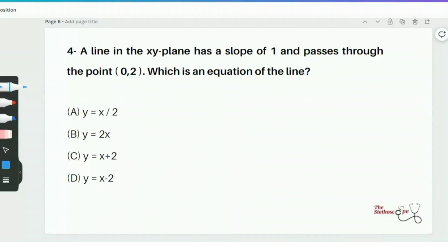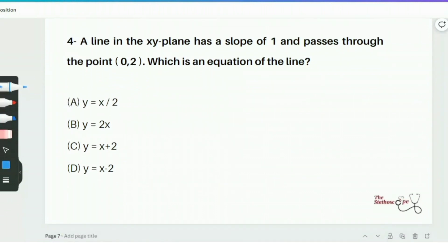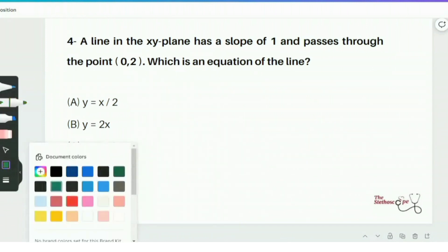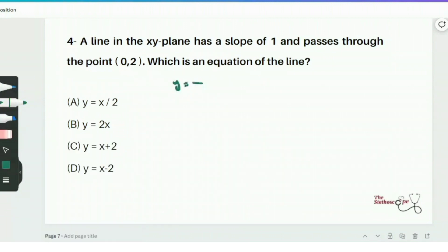Moving towards problem number 4, which is basically linear equation based question. They are telling us that the line has a slope of 1 and passes through the point 0, 2. The equation of the line in slope intercept form is y equals mx plus b, where m is the slope and b is the y intercept. Now I'll simply plug in the values. We know that it passes through point 2 and we are told that it has a slope of 1. So 0 times 1 is 0, so b equals 2. So I should have y equals x plus 2. And the correct answer should be option C.